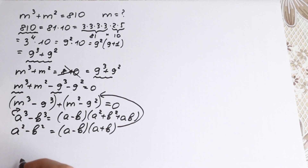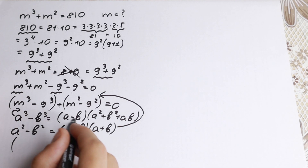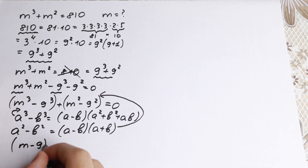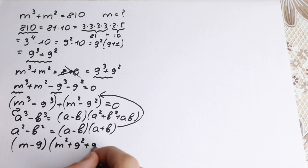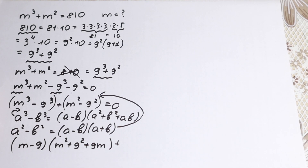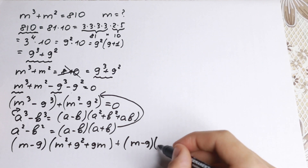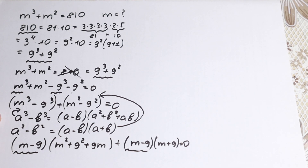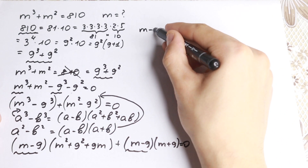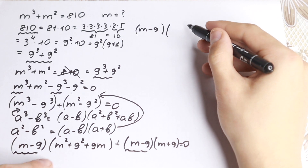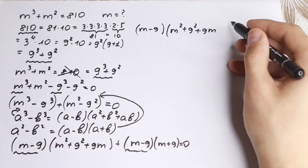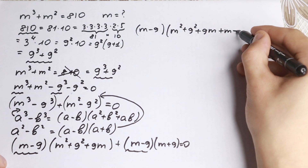Applying these formulas here with a = m and b = 9, the difference of cubes gives us (m − 9)(m² + 9² + 9m), and the difference of squares gives us (m − 9)(m + 9), so the full equation becomes: (m − 9)(m² + 9² + 9m) + (m − 9)(m + 9) = 0.